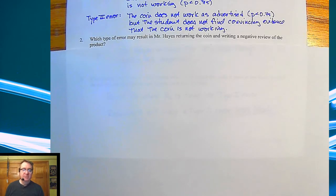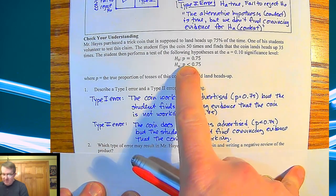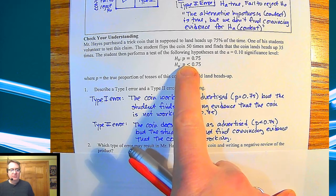So which type of error may result in Mr. Hayes returning the coin and writing a negative review of the product? Well, let's come back here.